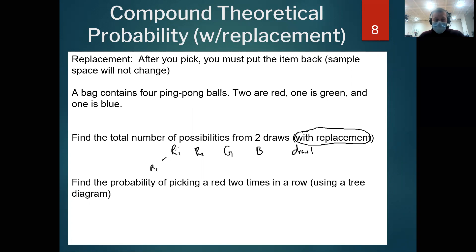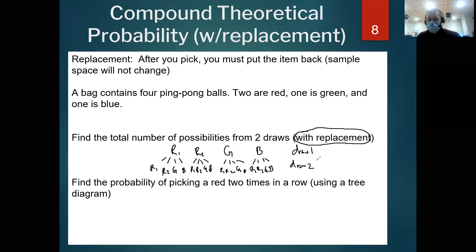There's a possibility that I pick the same item twice. For R1 I could pick R1 again, or R2, or green, or blue. This repeats for every single option. I can count all those possibilities: 1, 2, 3, 4, 5, 6, 7, 8, 9, 10, 11, 12, 13, 14, 15, 16. You had four options to start, and then four options after that — four times four is 16. So there are 16 different possibilities from two draws.